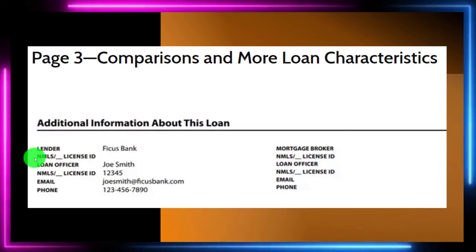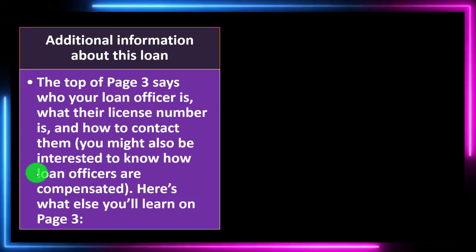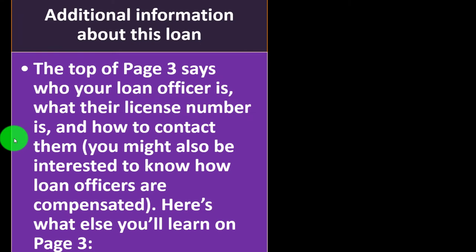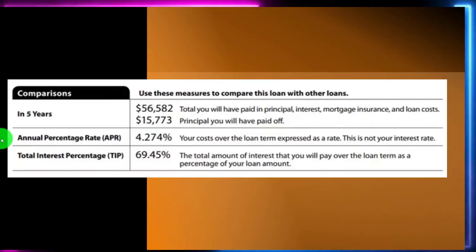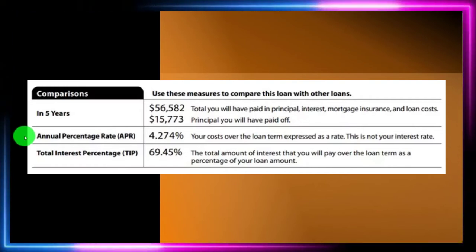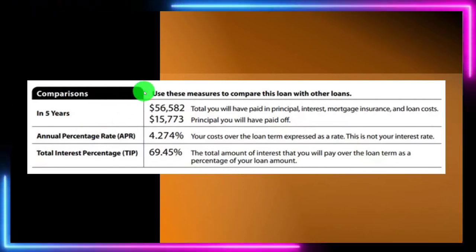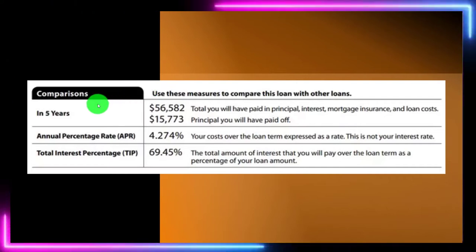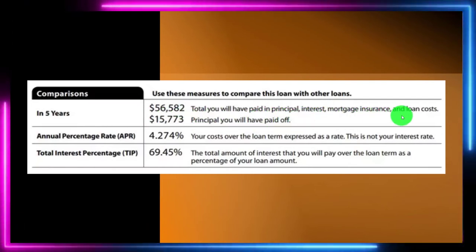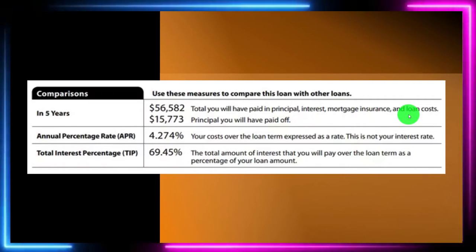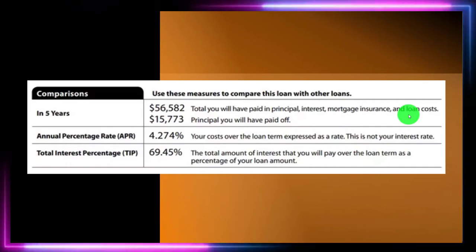Page three covers comparisons and more loan characteristics. A comparisons box provides four numbers to compare one loan estimate with another: in five years — total you will have paid in principal, interest, mortgage insurance, and loan costs ($56,582 in this example); principal paid off after five years ($15,773); the Annual Percentage Rate (APR); and the Total Interest Percentage (TIP). An amortization table would be nice to break these out further, and we'll work on those in practice problems.